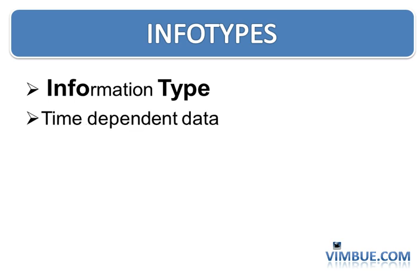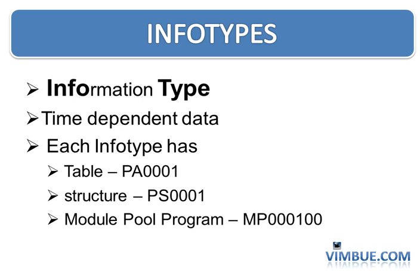Because it's not just a table. This table is going to save the data in terms of time dependency, meaning the data may be valid for some specific time period — which is again a different concept from the rest of the modules. Whenever you say an infotype, it will have a table, a structure, and a module pool program. So an infotype will be a module pool program that has a screen facilitating you to save values into the table at the back end.